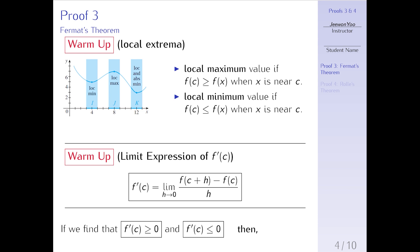Before we actually prove the theorem, let's study the definition of local extrema again. We say a function f has a local maximum value at c if the y value f(c) is greater than or equal to all the y values when x is near c. For example, if you look at this point, this is definitely a local maximum because this y value is greater than or equal to all the y values nearby this point.